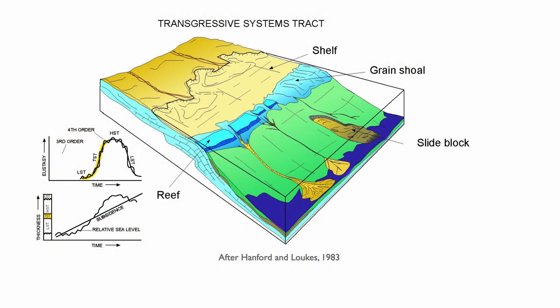During the transgressive systems tract, all the sands on the shelf are basically being reworked. You have a very classic rimmed shelf with evidence for grain shoals on the edge of the system, potentially reefs, and of course you can still have mass transport deposits.